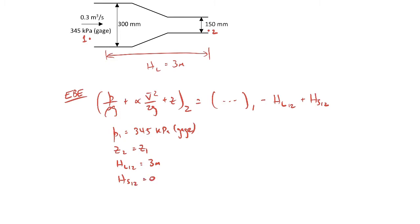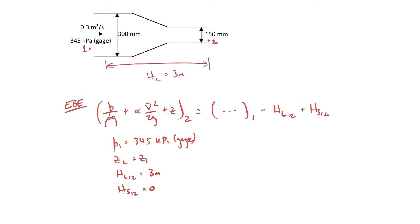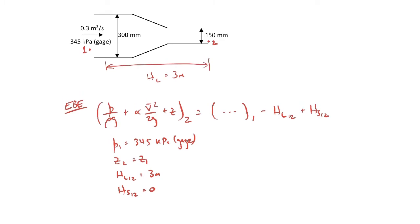The next thing is we have to find the velocity head at each of the points. We can find the average velocity at each point by using the volumetric flow rate. The average velocity will be the volumetric flow rate divided by the cross-sectional area of the pipe in those places. We can do that for location one and it'll look much the same for location two.